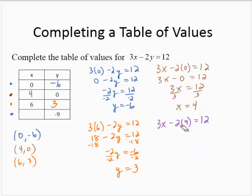I wrote 3x minus 2 times 9, and that was supposed to be a negative 9. So that's 3x. And instead of minus 18, that should be a plus 18.